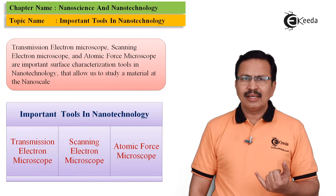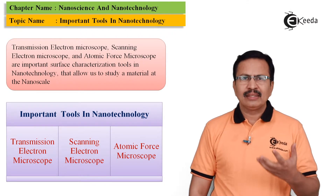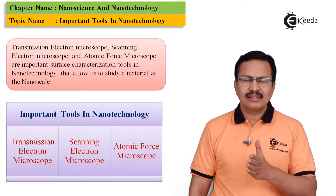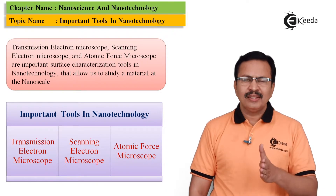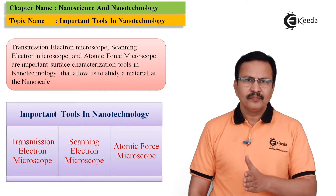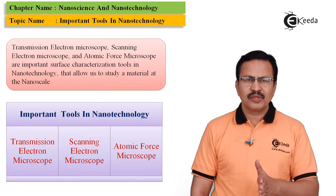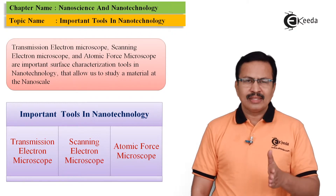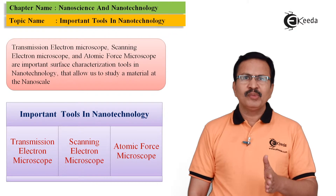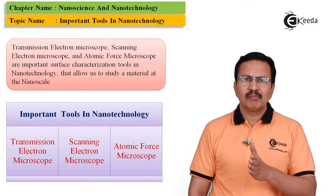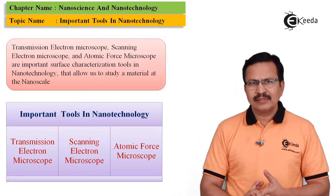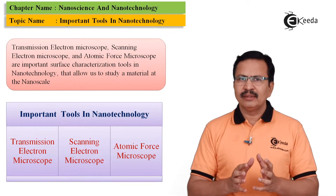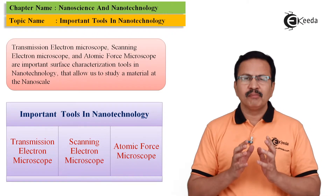One category is electron microscopes, and the second category is surface analysis techniques — the STM or the AFM. STM stands for the scanning tunneling microscope, whereas AFM stands for the atomic force microscope. Out of these, the first thing we are going to focus on is the electron microscope.